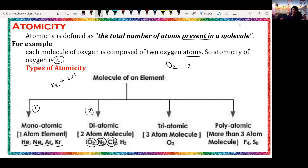Chlorine gas is present in Cl2 form — so here we have two chlorine atoms. Then we have hydrogen, which is also present in H2 form, containing two atoms of hydrogen. That is why it is a diatomic molecule.